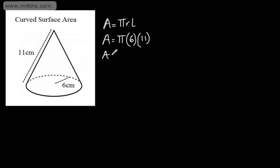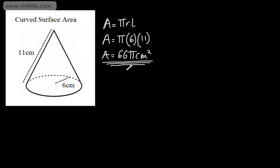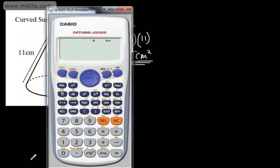As an exact answer — so if we weren't using a calculator, in terms of pi — this would give us 66 pi, and the units are going to be centimeters squared. So this is what we call an exact answer. And of course, in the calculator, you can simply type in 66 shift pi, and that will give us 207.3 centimeters squared.